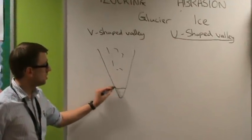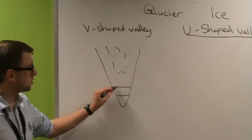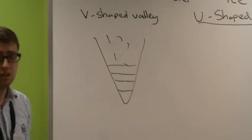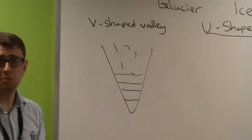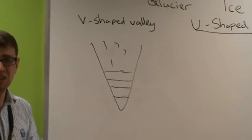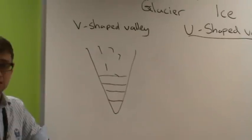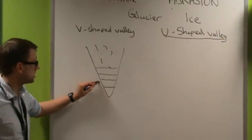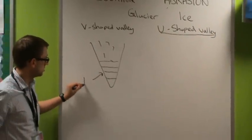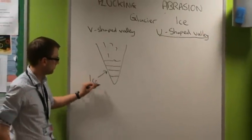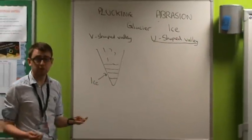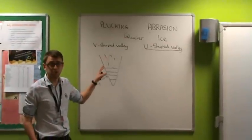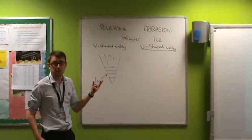this snow falls to the ground and starts to layer up. Over time, because it doesn't melt, it starts to compact and becomes ice. This is where our glacier forms — as soon as there's enough ice, it becomes a glacier.